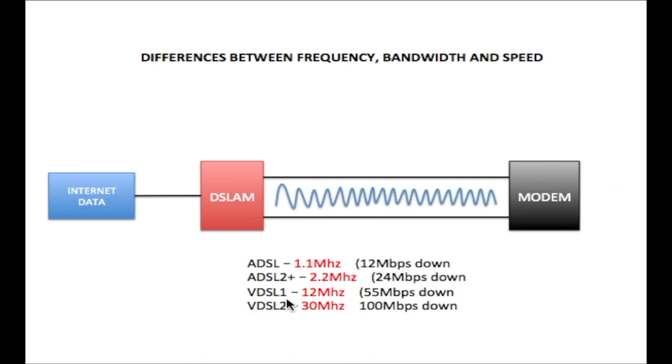When we go to VDSL 1 at 12 megahertz, the speed also increased to 55 megabits per second down, which would also increase the bandwidth and the speed. So both the bandwidth and the speed will be 55 megabits per second here as well. On VDSL 2, which is at 30 megahertz, you have 100 megabits per second down, and the bandwidth would also be at 100 megabits per second. So as you can see, both the bandwidth and the speed is the same.